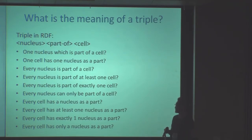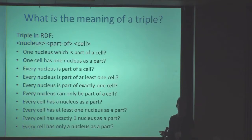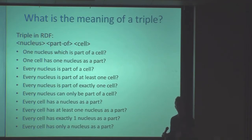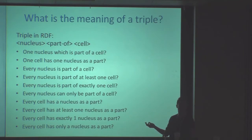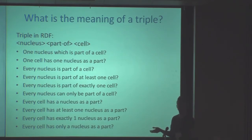If you look at this triple, it says nucleus is the subject, the relationship is 'part of', and the object is cell. What is the intent of this statement? Is it that for every nucleus it's always part of a cell? Or is it that every cell has a nucleus? Or is it mutual? Is it that a cell could sometimes have a nucleus as a part, or is it always? Is it exactly one? There are a lot of unanswered questions as to what this statement actually means.